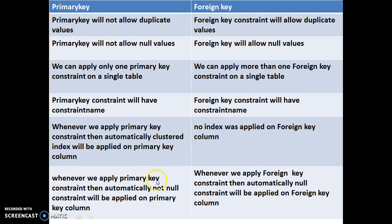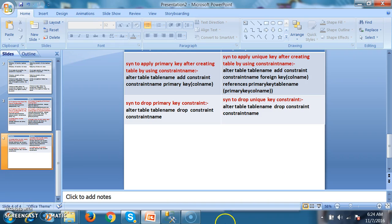Whenever we apply primary key constraint, automatically a NOT NULL constraint will be applied on the primary key column, and that NOT NULL constraint will not allow you to insert null values. Similarly, whenever we apply foreign key constraint, automatically a NULL constraint will be applied on the foreign key column. The main advantage of foreign key constraint is that it is generally used to establish the relationship between two or more tables.